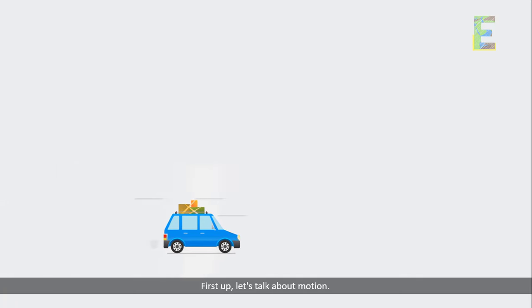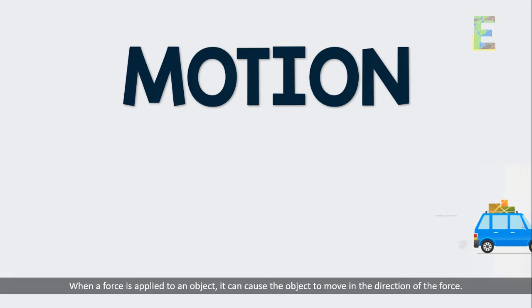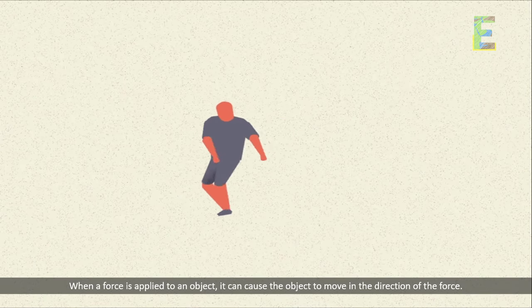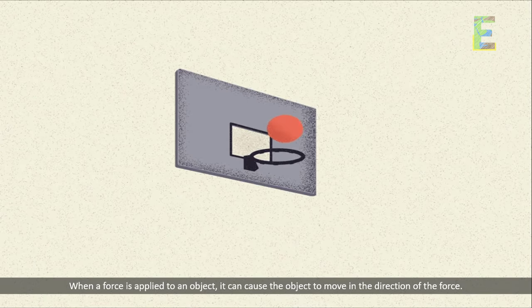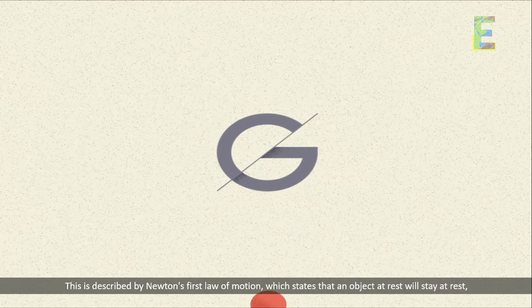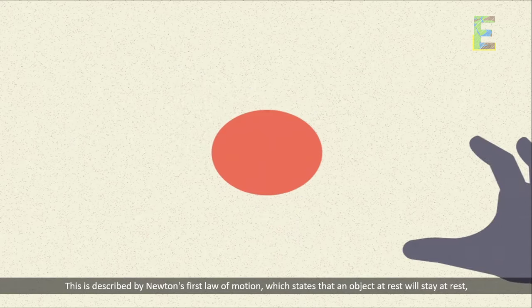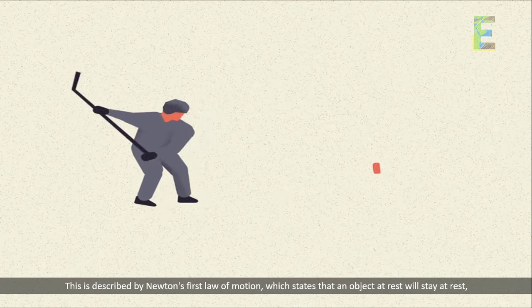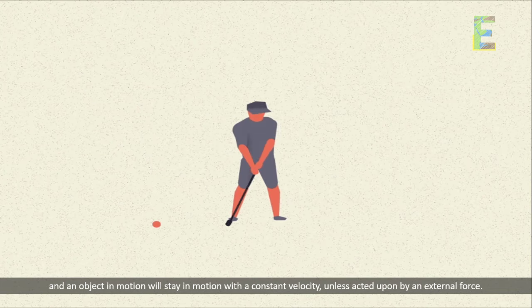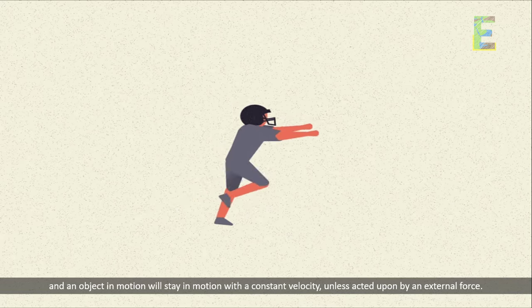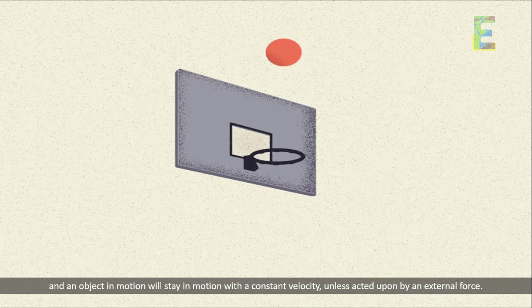First up, let's talk about motion. When a force is applied to an object, it can cause the object to move in the direction of the force. This is described by Newton's first law of motion, which states that an object at rest will stay at rest, and an object in motion will stay in motion with a constant velocity